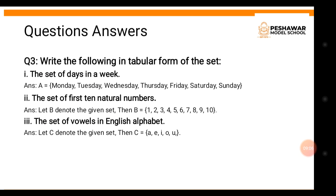Question 3: Write the following in tabular form. Tabular form means listing elements inside braces with a set name. Number one: the set of days in a week — let A denote this set. A = {Monday, Tuesday, Wednesday, Thursday, Friday, Saturday, Sunday}. Number two: the set of first ten natural numbers — let B denote this set. B = {1, 2, 3, ..., 10}.